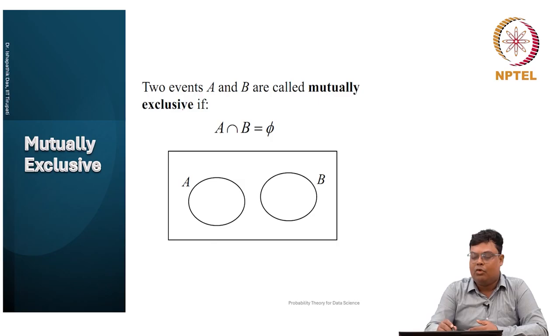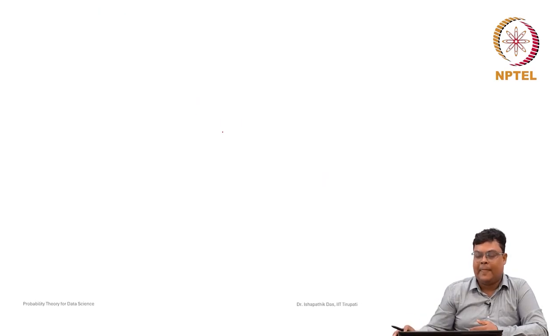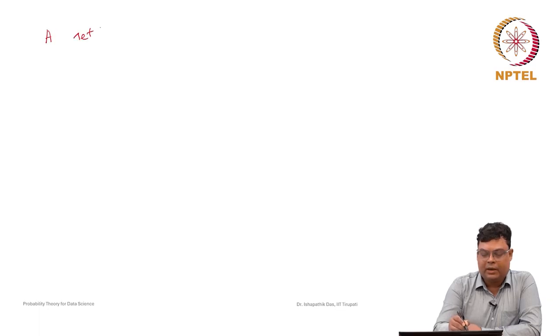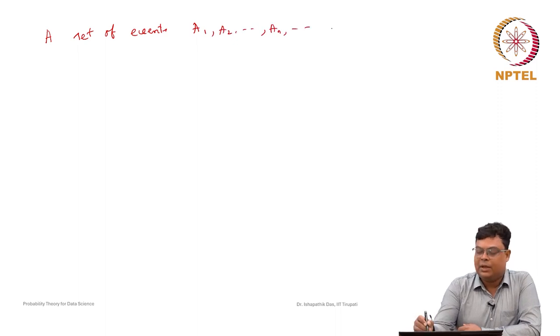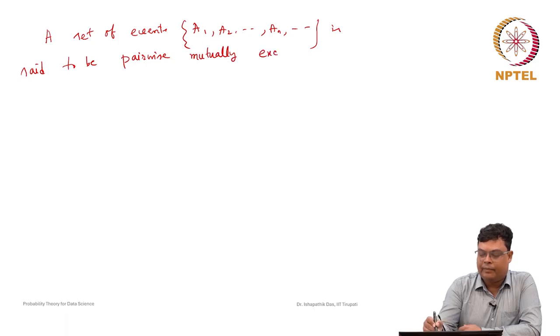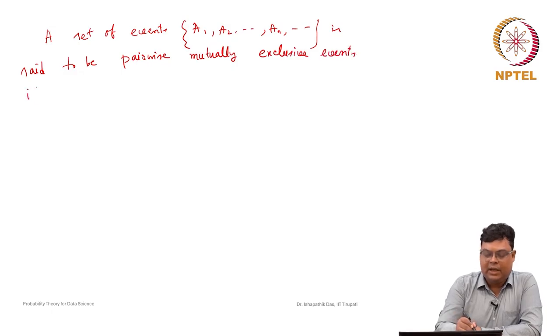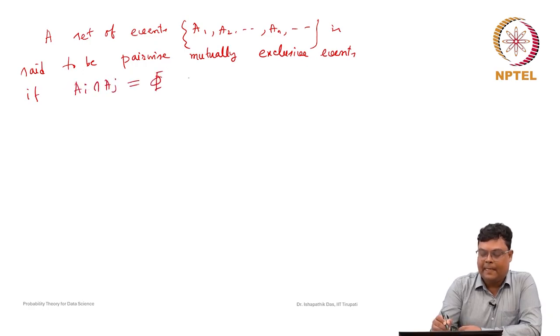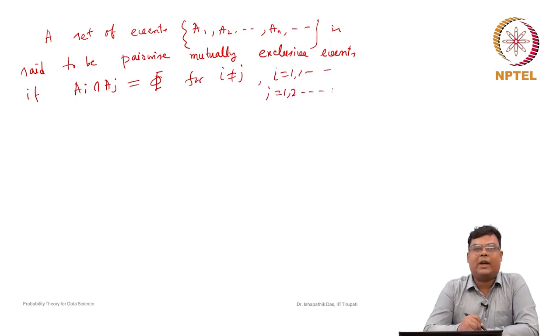Two events A and B are called mutually exclusive if A intersection B is equal to phi. The extension of this concept is pairwise mutually exclusive events. A countable collection of events A1, A2, ... is said to be pairwise mutually exclusive if A_i intersection A_j equals phi for any i not equal to j, where i and j range over the index set. This is called a pairwise mutually exclusive set of events.